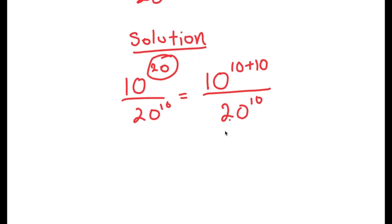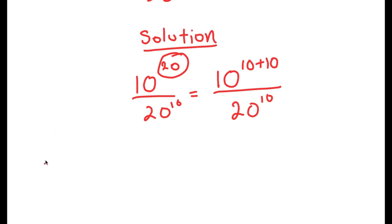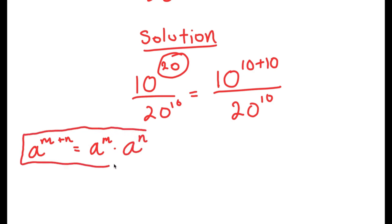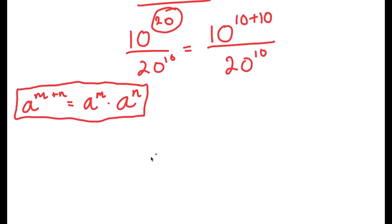The reason I did that is so I can use the property: a to the power of m plus n is equal to a to the power of m times a to the power of n. This is an important property of exponents, and I'm going to use it on 10 to the power of 10 plus 10, which turns into 10 to the power of 10 times 10 to the power of 10.